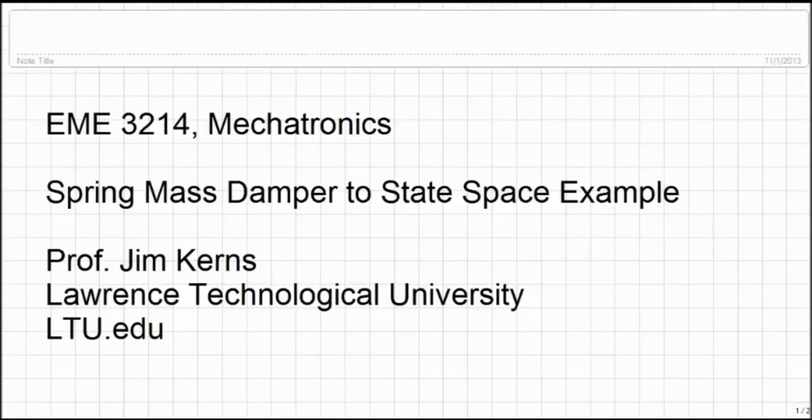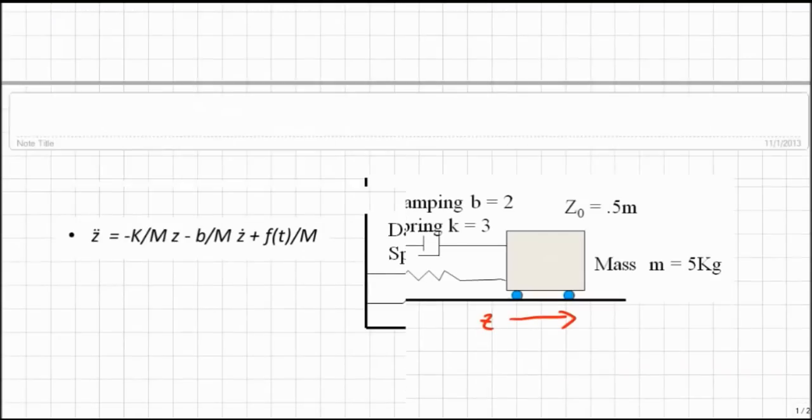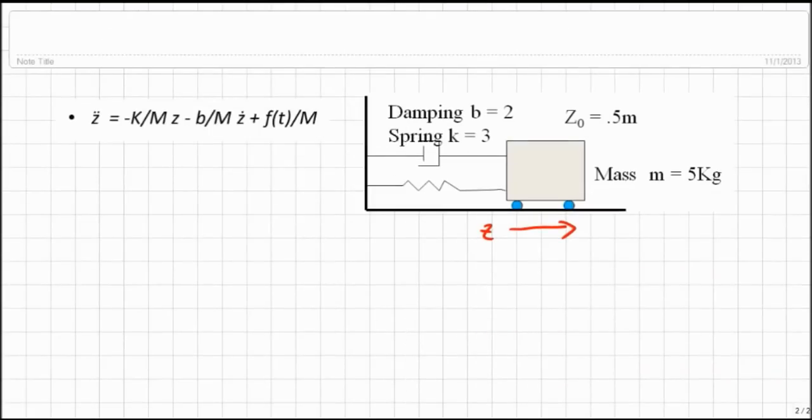This is EME 3214, Mechatronics, another example just working through examples of different things that we would need to do for homework or for exams, to help the students with that. So let's slide down. This one's just going to be a paper and pencil exercise. I have our spring mass damper back again. That's every mechanical engineer's favorite model, I'm sure. And I'm going to take the equations of motion that I have right here and put them into state space form instead of a Laplace transform transfer function like we did last time.